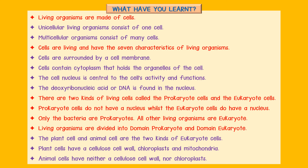Living organisms are divided into domain prokaryote and domain eukaryote. The plant cell and animal cell are the two kinds of eukaryote cells. Plant cells have a cellulose cell wall, chloroplasts, and mitochondria. Animal cells have neither a cellulose cell wall nor chloroplasts.